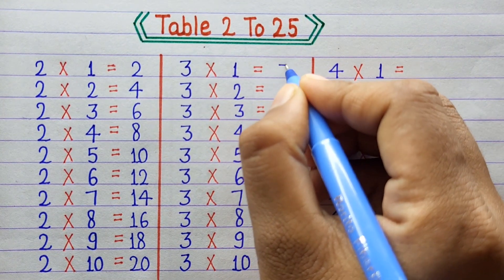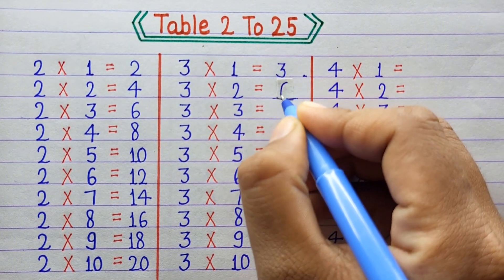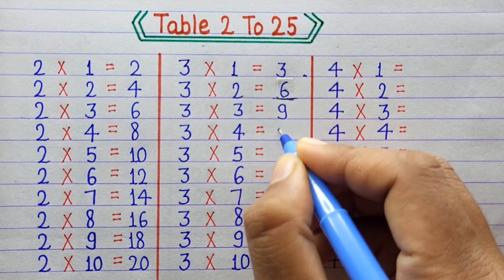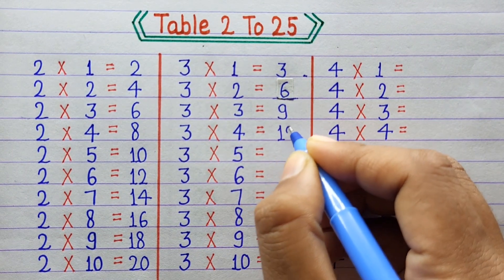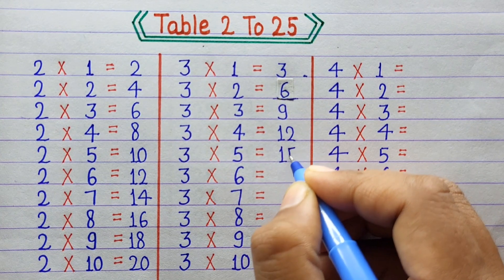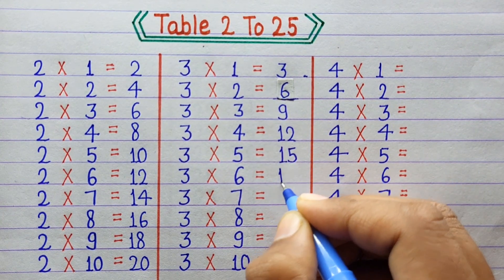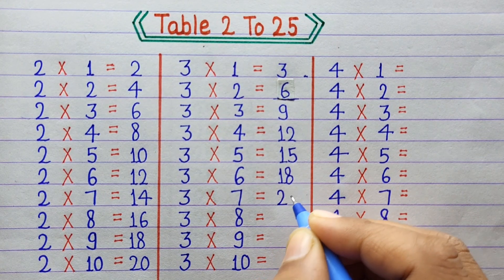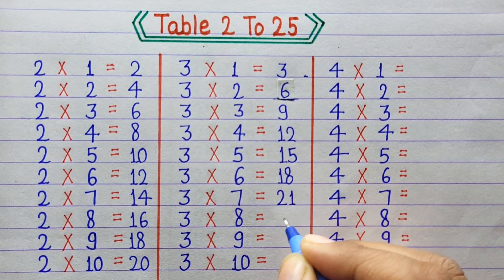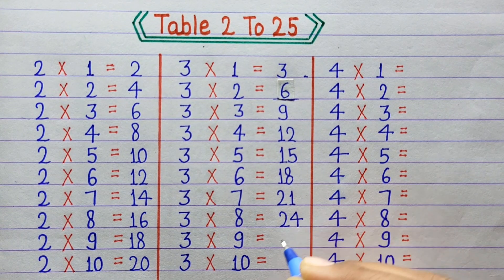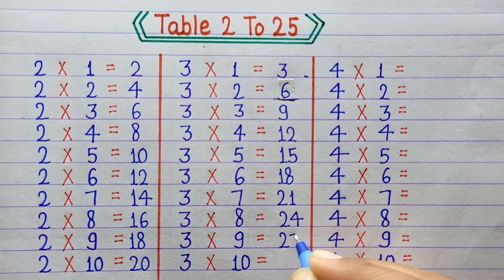3×1=3, 3×2=6, 3×3=9, 3×4=12, 3×5=15, 3×6=18, 3×7=21, 3×8=24, 3×9=27, 3×10=30.